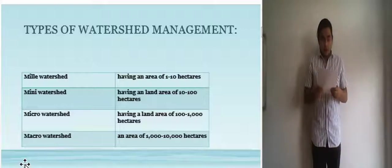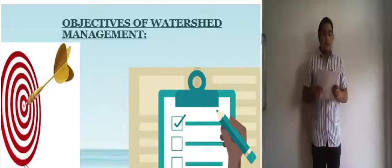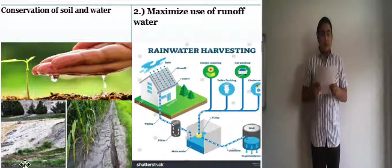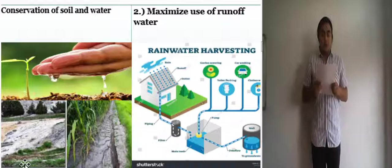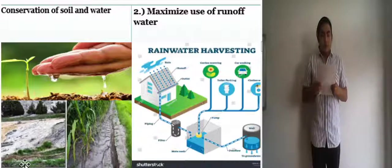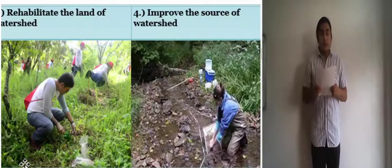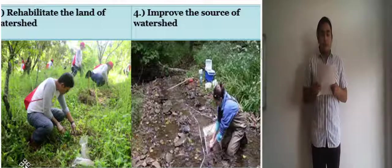Now there are different objectives of watershed management. These objectives of watershed management are first, conservation of soil and water. To control the damaging runoff and degradation. Also to control and prevent soil erosion. To minimize the overexploitation of resources. Second one is to maximize use of runoff water. To manage and utilize the runoff water for useful and effective purposes. Third one is to rehabilitate the land of watershed. To protect, conserve and improve the land of watershed for efficient and sustainable production for years to come.